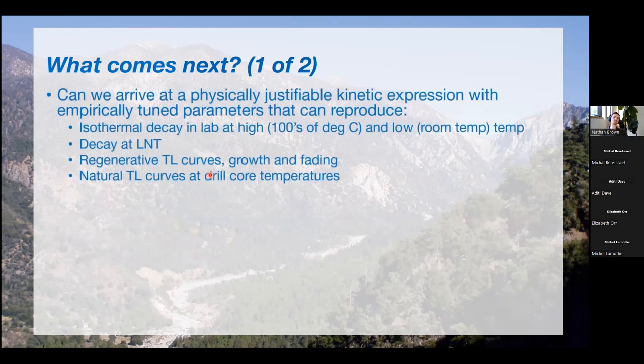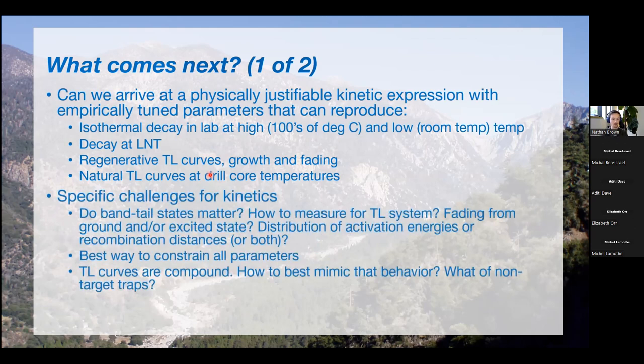And then lastly, the kinetic models behind these things need to be refined a lot. It's a really complicated problem, and so we have these rich observational data sets, and it remains really difficult to fit all the observations with a single model. So further work is needed there. This last one is just sort of for the luminescence nerds in the audience, specific challenges for kinetics. And really what I want to communicate with this is just there are significant uncertainties still on exactly how the math of this thing works. So more is needed there.